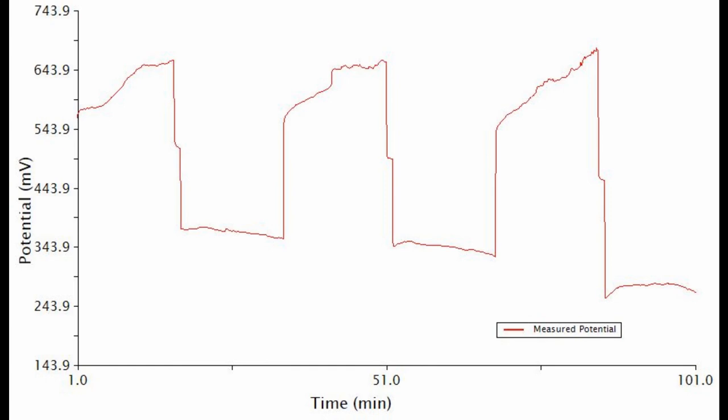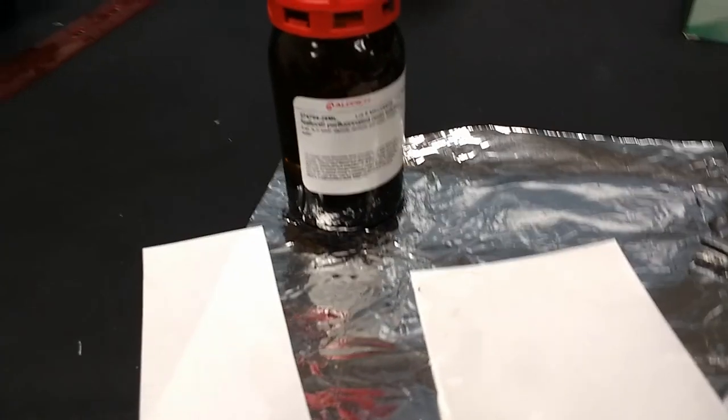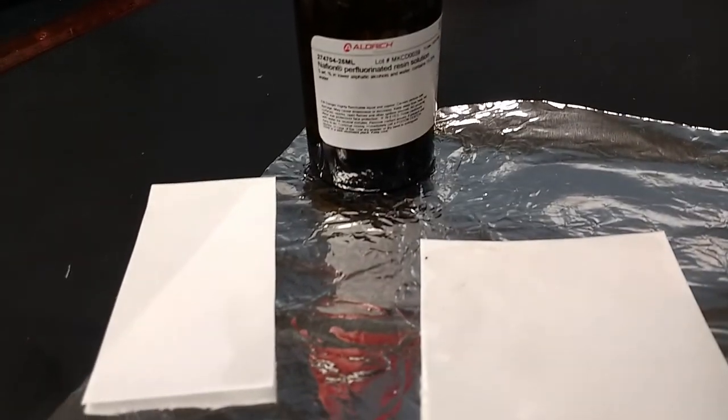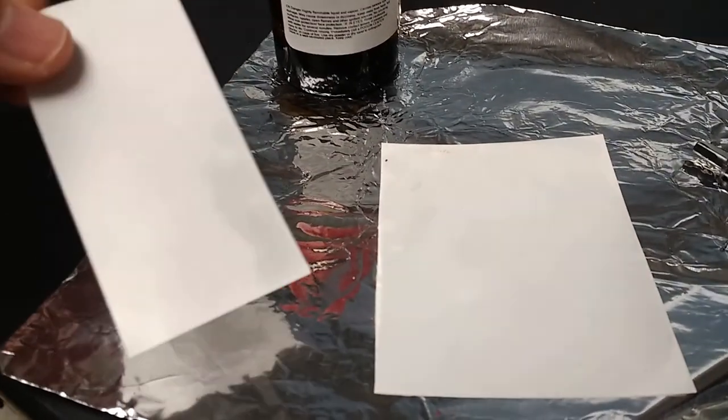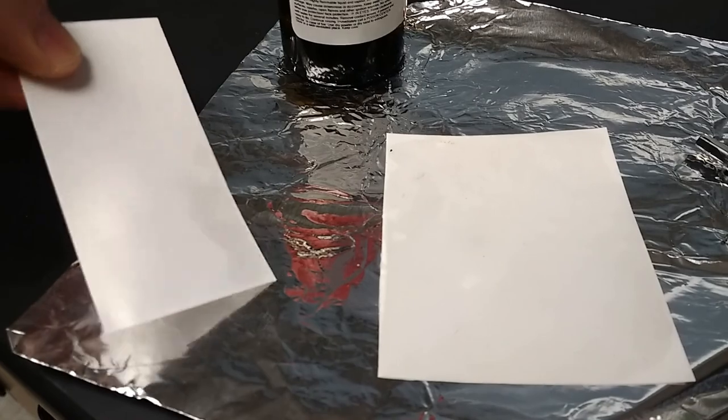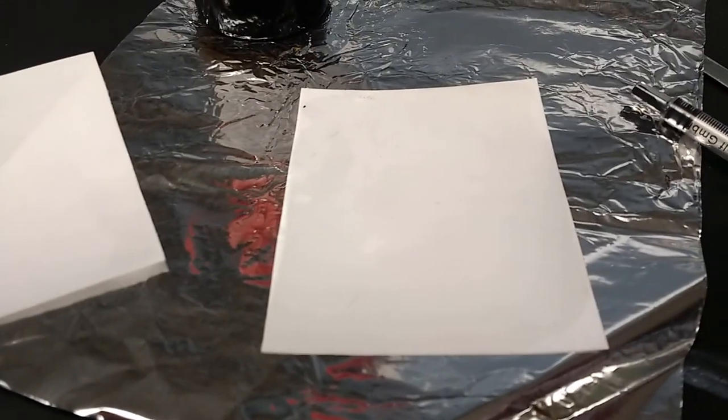So today, I rebuilt the cell with the Nafion membrane instead of just a paper separator, and the results I'm hopeful will be better. So the way you put Nafion into this is you buy a liquid that has this Nafion perfluorinated polymer in an alcohol solution, and you apply that to paper and let it dry.